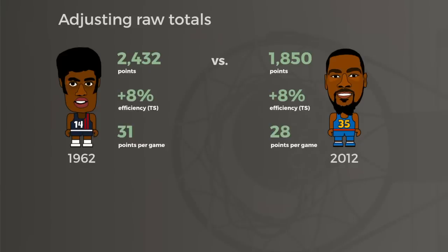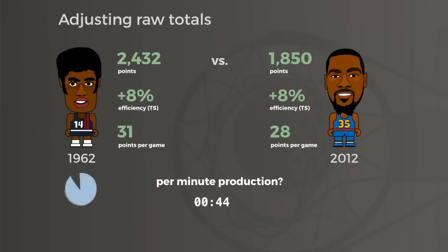But how much more have we really leveled the playing field here? What if one player logged more minutes per game? Oscar played 44 minutes a night to Durant's 38, so Robertson indeed had more time to score all those points. If we use per-game stats, we wouldn't be able to see their production per minute. We'd think players who dominate in shorter time periods were less effective than they really were.